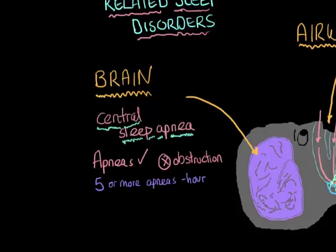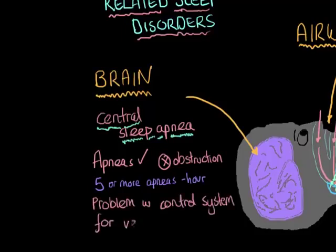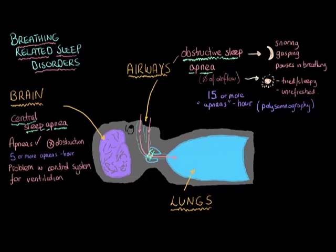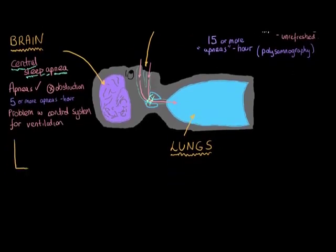And really, when we think about these apneas, we believe that in central sleep apnea, there's a problem with the brain's control system for ventilation. So basically, the parts of the brain that help control the breathing are malfunctioning. Now, I'm just going to talk to you about a particular type of breathing malfunctioning that happens in central sleep apnea.